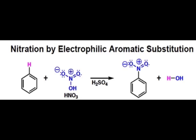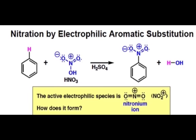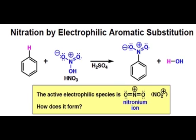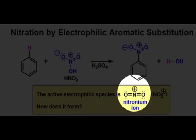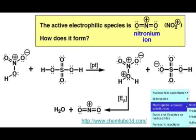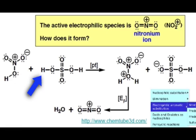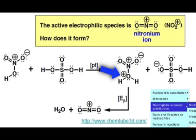Aromatic rings can be nitrated by reaction with a mixture of concentrated nitric and sulfuric acids. The key electrophile in this reaction is the nitronium ion. The nitronium ion is generated from nitric acid, first by protonation from sulfuric acid and then a loss of water.